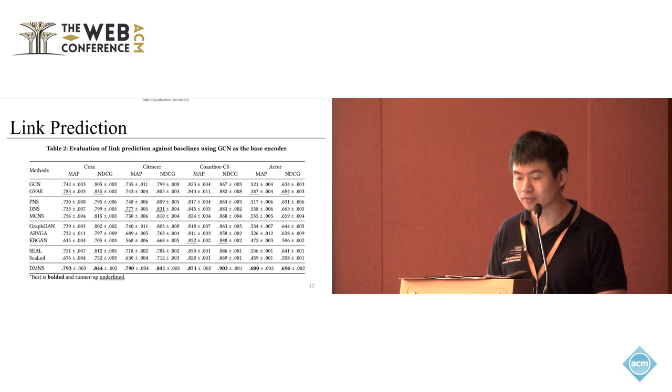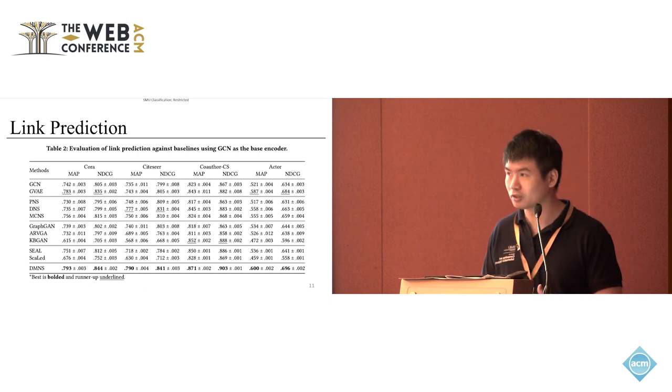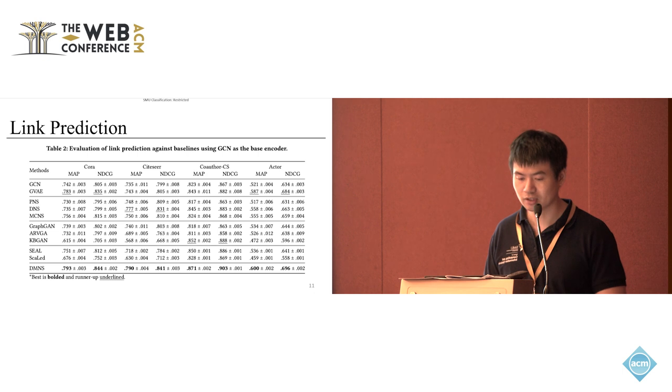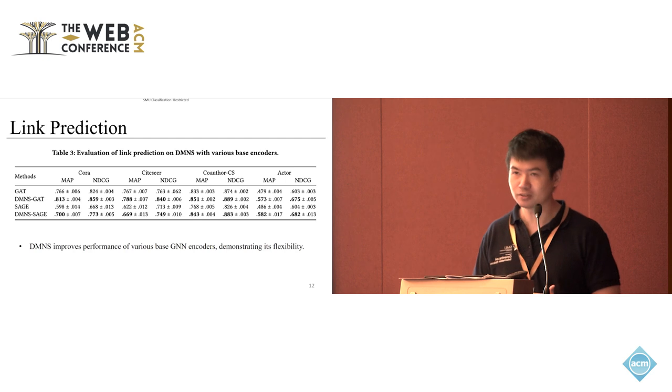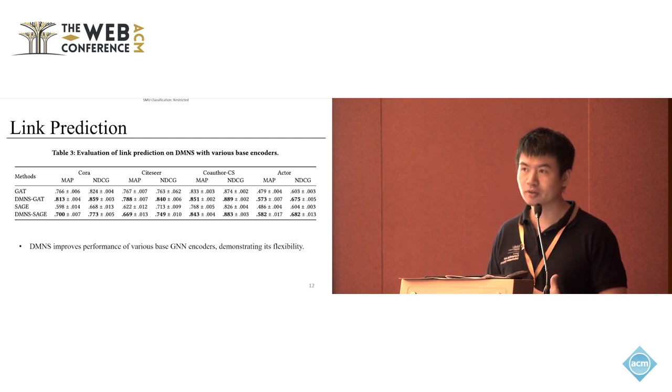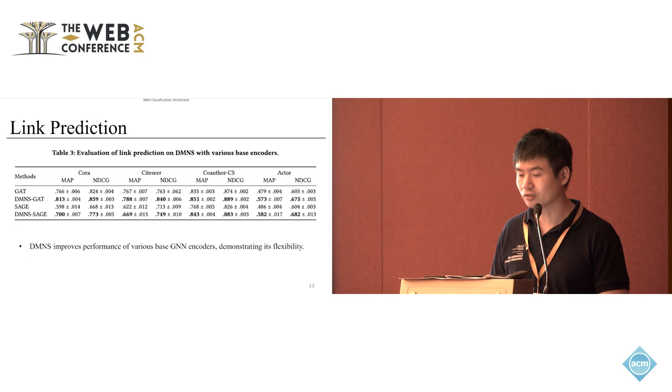We are using ranking metrics because we treat the link prediction problem as a ranking problem. Given a query node v, can we rank the positive nodes higher?